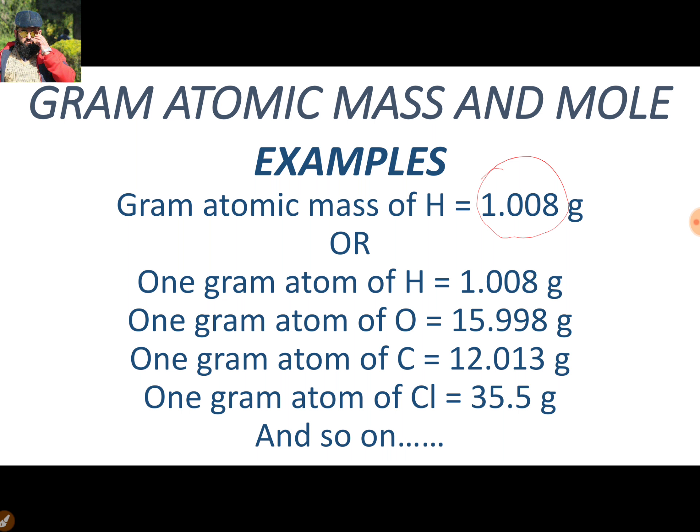Similarly, one gram atom of oxygen is 15.998 grams, that of carbon is 12.013 grams, and that of chlorine is 35.5 grams. These are the examples to make clear what gram atomic mass is, and it is also known as one gram atom of an element. It does not mean that one atom of hydrogen is 1.008 grams; the term 'gram atom' or 'one gram atom' is used to refer to the gram atomic mass of an element.